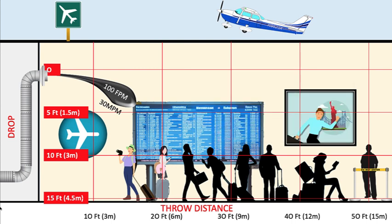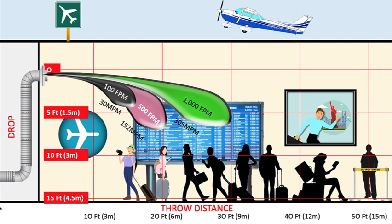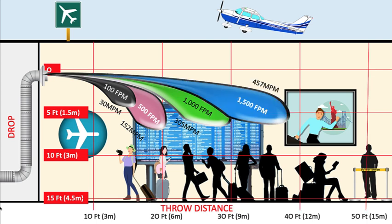At a velocity of 100 feet per minute, the air will drop 3 feet and reach 12 feet in distance. At a velocity of 500 feet per minute, the air will drop 7 feet with a throw of 20 feet. At a velocity of 1,000 feet per minute, the air will drop 6 feet and reach 30 feet in throw distance. And finally, with a velocity of 1,500 feet per minute, the air drops 5 feet and reaches 35 feet in distance.